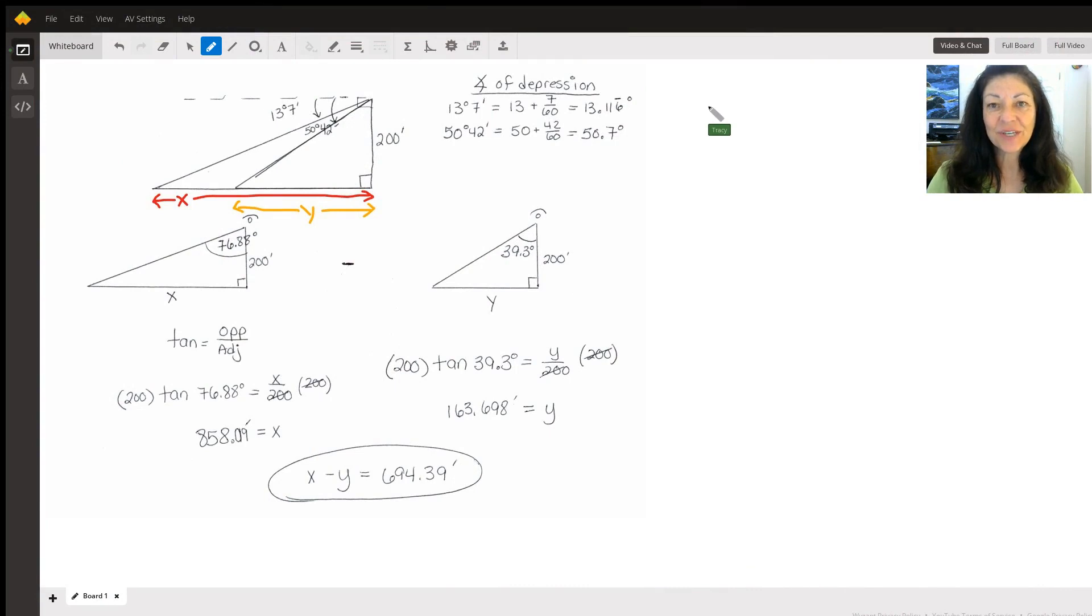So this is a trig problem that you're going to set up with a little sketch that I've done right here for you. You're at the top of the lighthouse and you see a boat out here with an angle of depression of 13 degrees 7 minutes, and the first thing you're going to do is convert the minutes to a decimal.